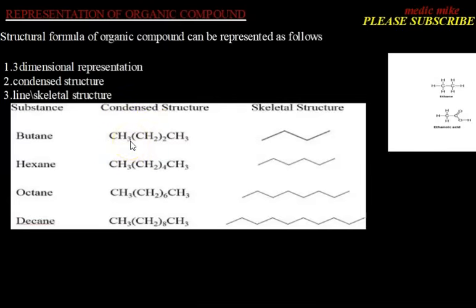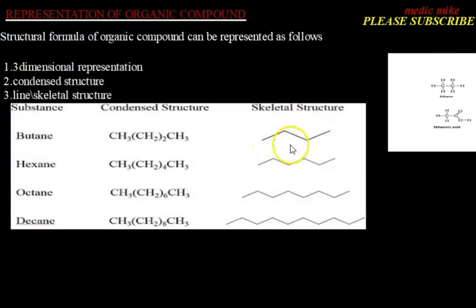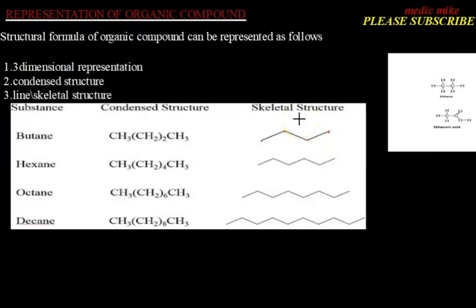In the condensed structure, we combine groups into methyl groups or CH₂ groups. In the skeletal structure, lines represent bonds, and at the points where lines are joined we have a carbon atom. This is the condensed structure of butane, and this is the skeletal structure showing four carbon atoms. So we hope you understand the 3D representation, condensed structure, and line or skeletal system.